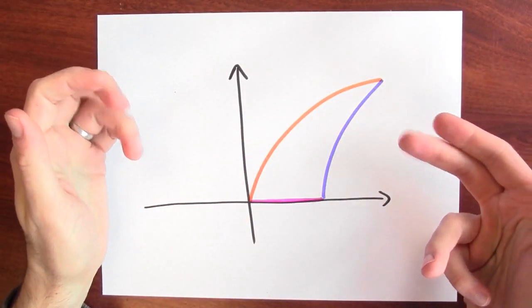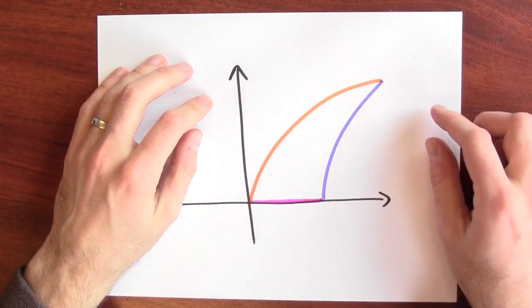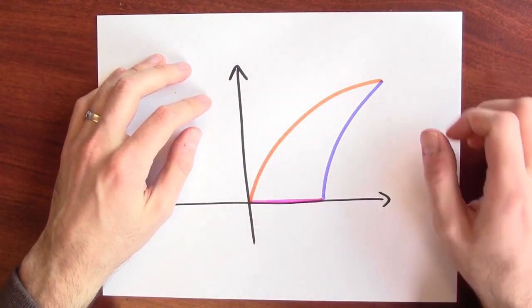But if both work, which one should we choose? The best choice depends on the shape of the region. I like to think about how many different kinds of edges my rectangles will touch. Here's an example to demonstrate what I mean.